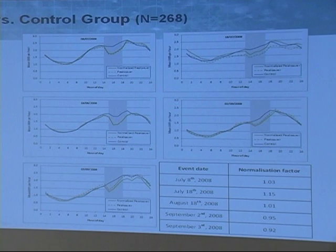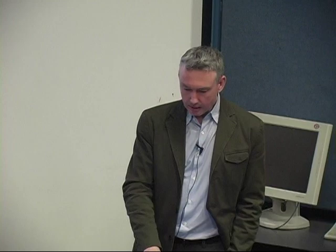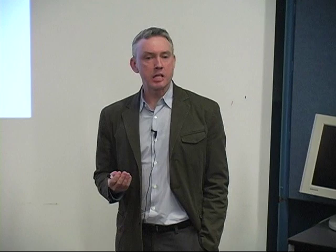You'll notice that on August 18th, the control group's purple line also takes quite a dip during the Peak Saver event. That appears to be because a large storm passed through that day and air temperature dropped dramatically over a couple of hours, causing air conditioner loads in the control group to drop as well. For an equivalent day approach, you'd like to find a day with similar weather, close in the calendar to the event day — which is actually very difficult to do.